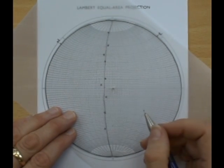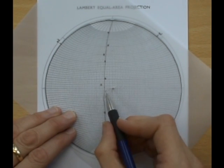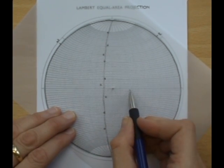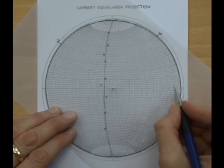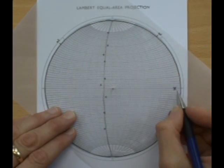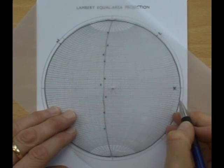Next we can use this to find the fold axis and this will be the pole to this great circle. So we go 10, 20, 30, 40, 50, 60, 70, 80, 90 degrees. This is the pole to this great circle and it's the fold axis to the fold.